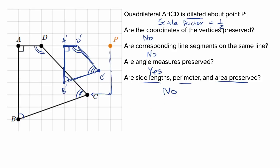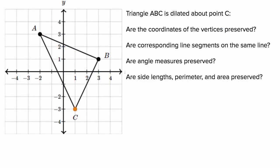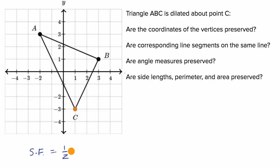Let's do another example. Triangle ABC is dilated about point C. Once again, they don't tell us the scale factor, and they ask us the same four questions. Pause the video and see if you can figure it out on your own. Now let's work through it together — I'll apply a scale factor of one half so we can visualize what the image looks like after the dilation.